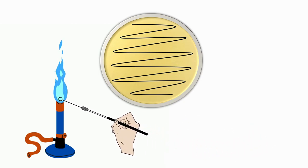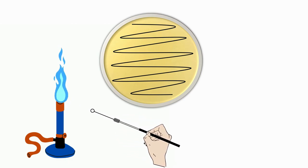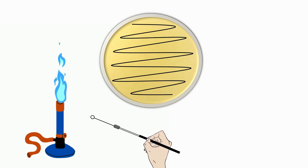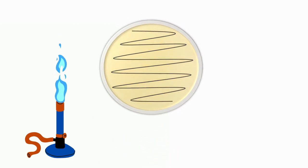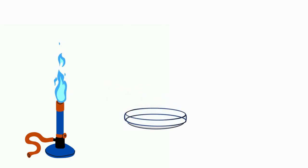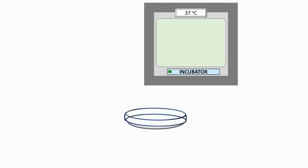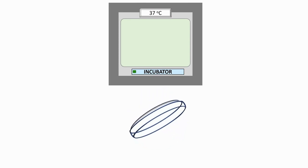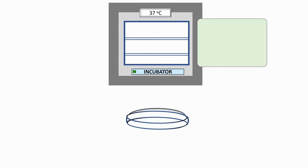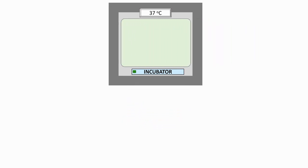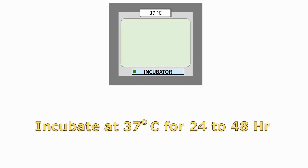Hold the loop in the flame to sterilize and keep the loop aside. Replace the lid immediately and invert the plate. Label it and keep the plate in an inverted position for incubation in the incubator. Incubate the plate at 37 degrees Celsius for 24 to 48 hours.